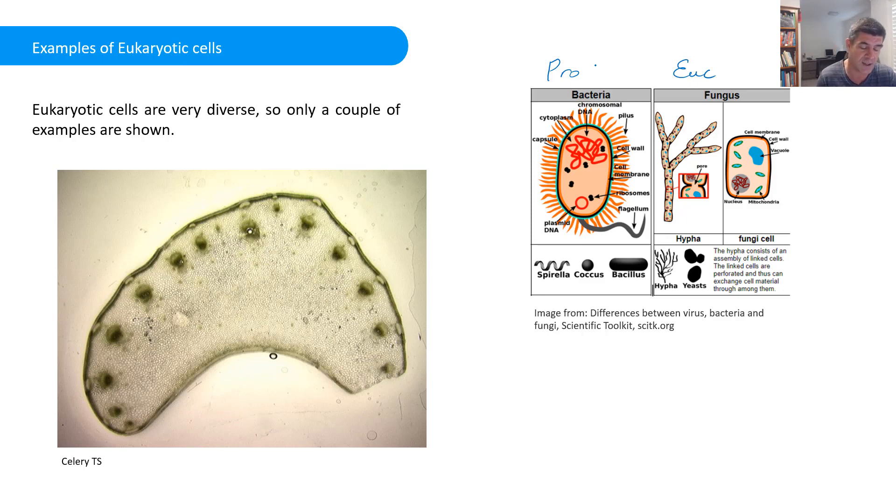And on the left there is a transverse section of a celery. You can actually start to get a sense of the cells that we're looking at here and also the fact that in some eukaryotic organisms, there are different types of cells, so they're not all identical. And one very important thing that we're going to keep in mind as we go through our biology course is the relationship between structure and function.